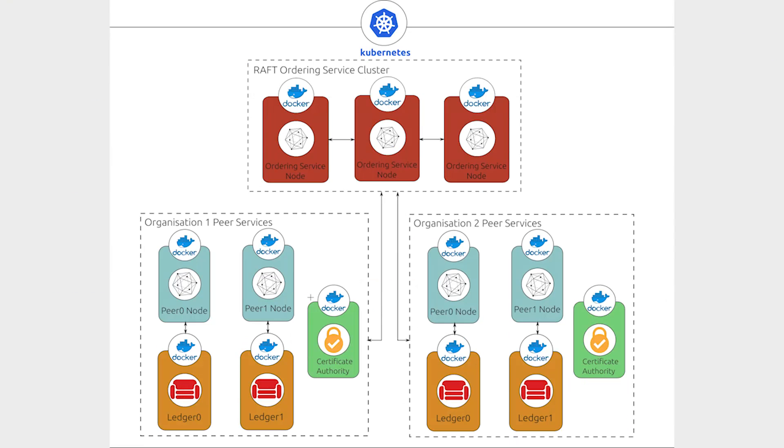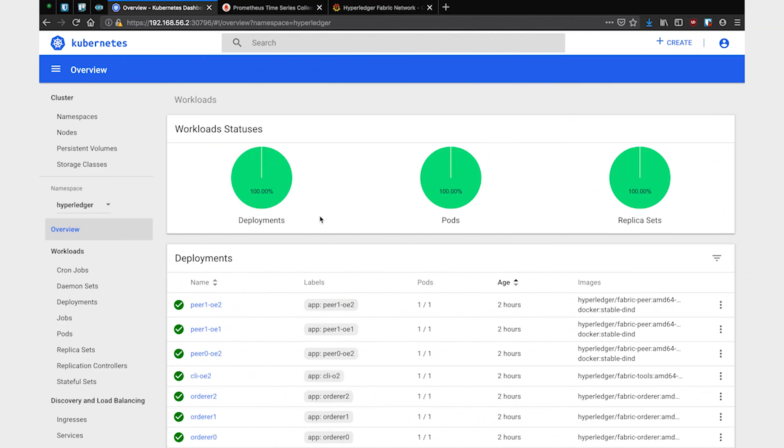Hi everyone. Today we're going to take a look at how blockchain networks behave in a cloud container environment, by increasing observability and maintainability of these networks. We're going to use technologies such as Kubernetes for our cloud container platform, Hyperledger Fabric for the blockchain protocol, and Prometheus and Grafana for taking observability to these blockchain networks.